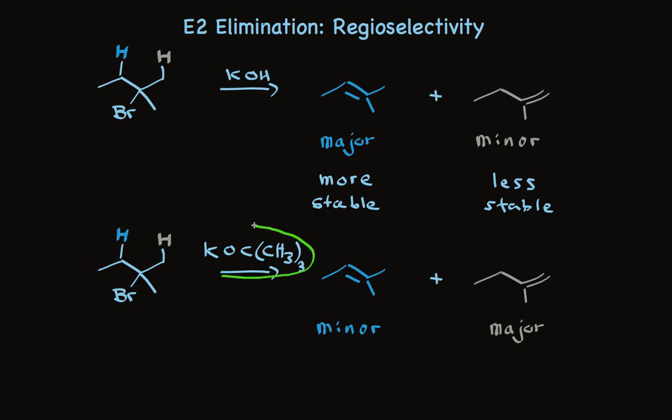The large bulky base is very sensitive to the steric environment of the protons. This hydrogen has more alkyl groups around it, so it's more sterically hindered. The tan hydrogen is more accessible, so this base preferentially reacts to the tan hydrogen because it's so bulky.